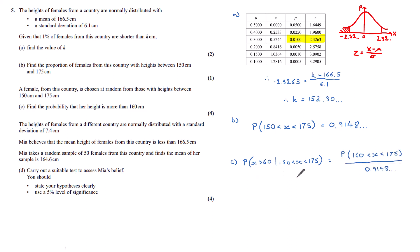When we have a given that probability, it's the same as the probability of these two things being together. So the probability of being greater than 160 and in between 150 and 175 is the probability of being between 160 and 175. And that should be divided by the probability of being between 150 and 175, which we've already found to be 0.9148 and so on.